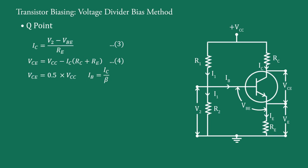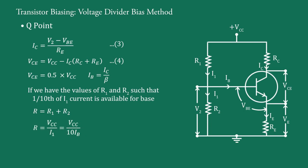Since IB equal to IC upon beta and we have taken the value of R1 and R2 such that one tenth of I1 current available for base. Let R equal to R1 plus R2. And therefore, R equal to VCC upon I1, that is equal to VCC upon 10IB. And R2 equal to V2 upon I1. And therefore, R1 equal to R minus R2. So, by keeping these values of R1 and R2, we get base current IB equal to I1 upon 10.